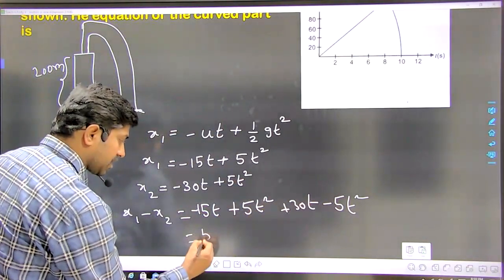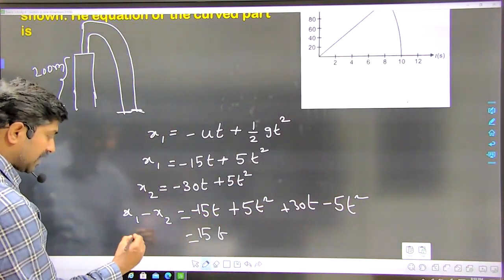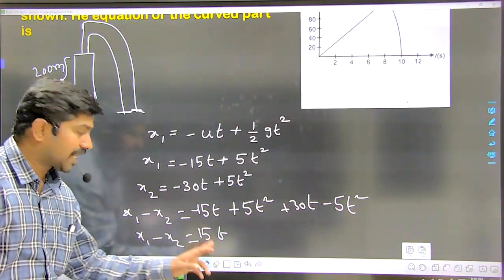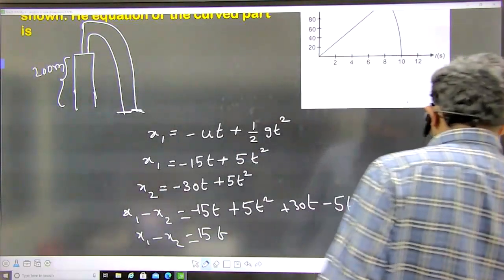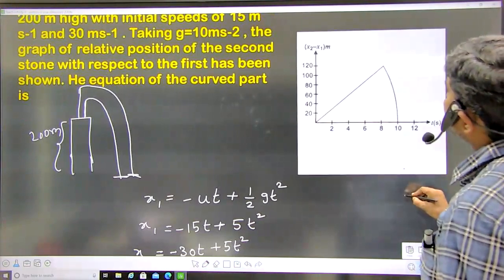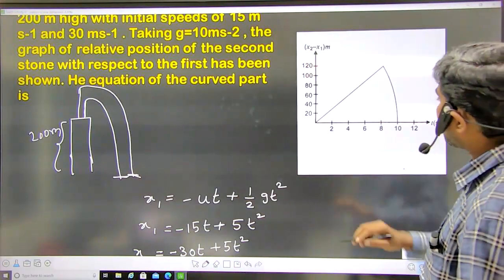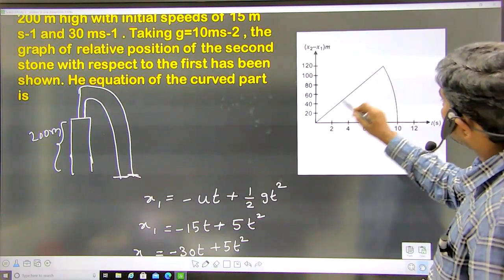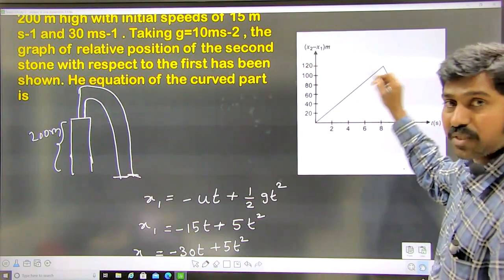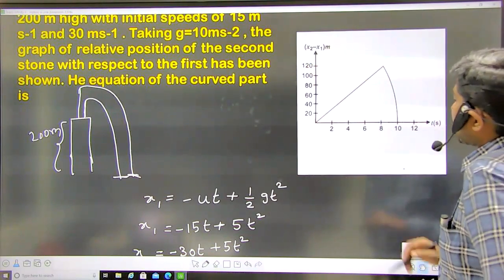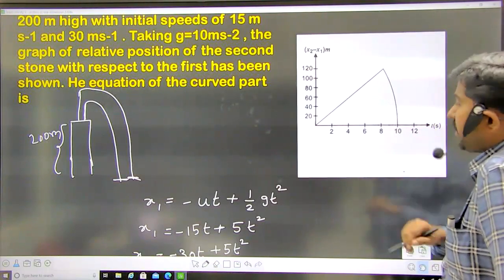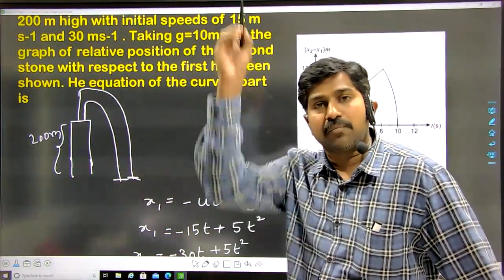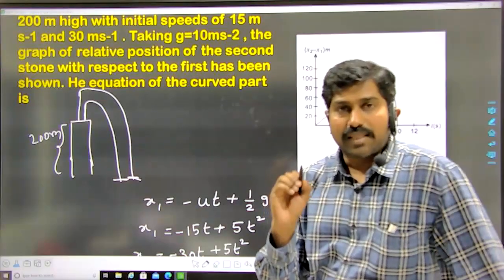After cancellation, you get minus 15t plus 30t, which equals 15t. So x2 minus x1 equals 15t — the relative position between the two particles is directly proportional to time. Based on that, the graph shows a straight line for x2 minus x1 vs time. This holds until the first particle reaches the ground, after about 8 seconds. After that, one particle has landed but the second is still moving in the air.